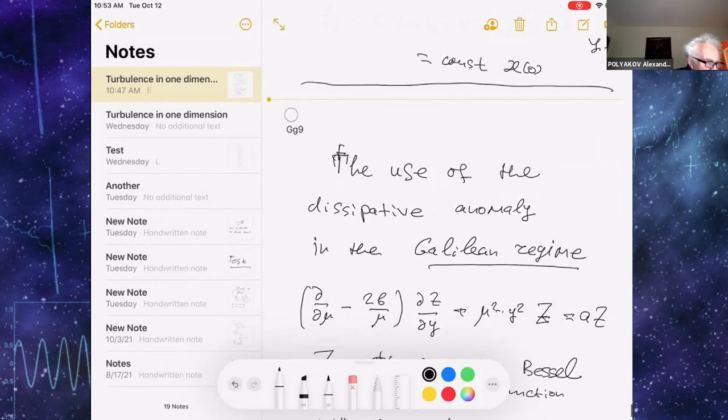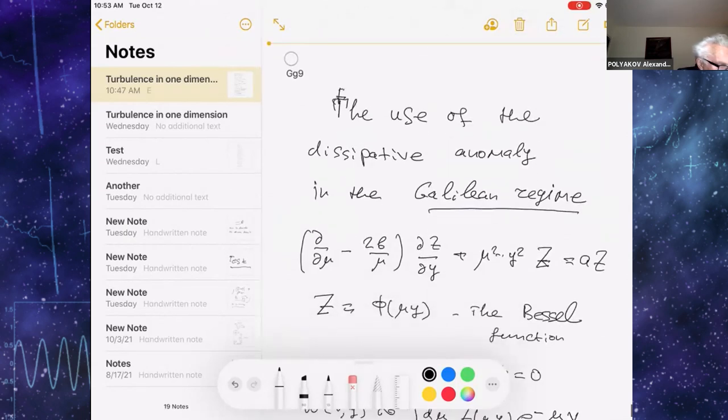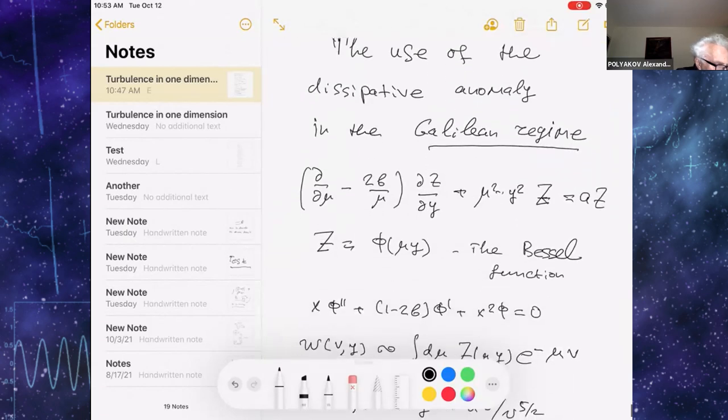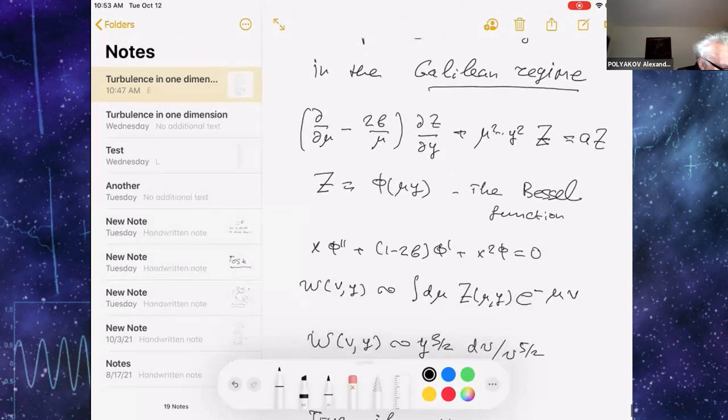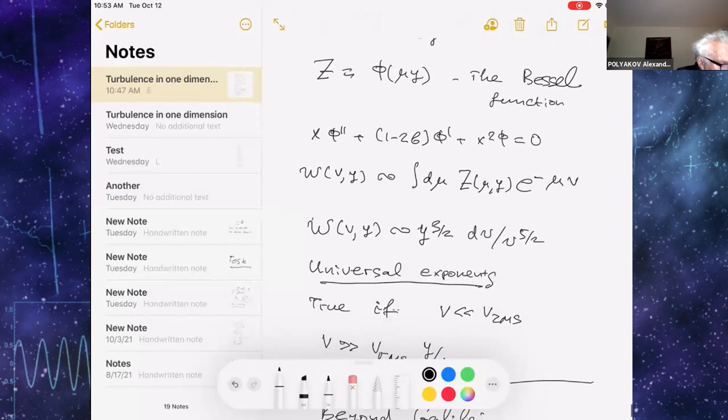You can reduce the master equation to the equation written here. And you can find scaling solution and get the universal answer, which is written here. So w here is probability for having velocity, you have two points separated by the distance y. And v is the velocity difference, velocity increment between two points. And w is the probability of this.